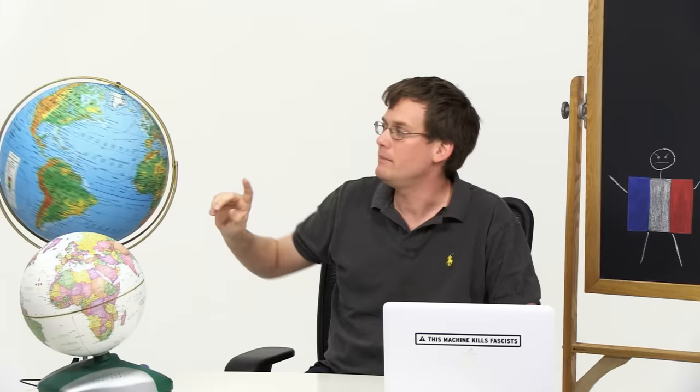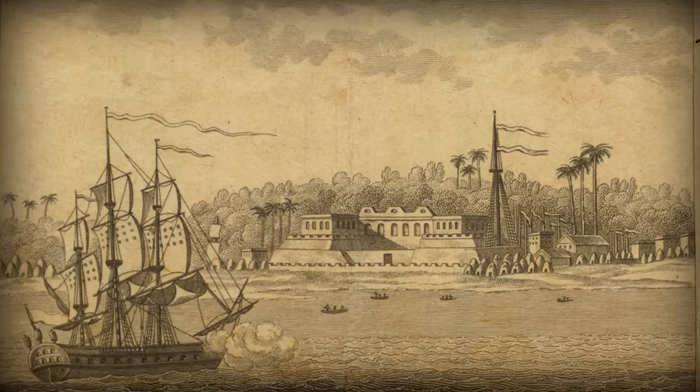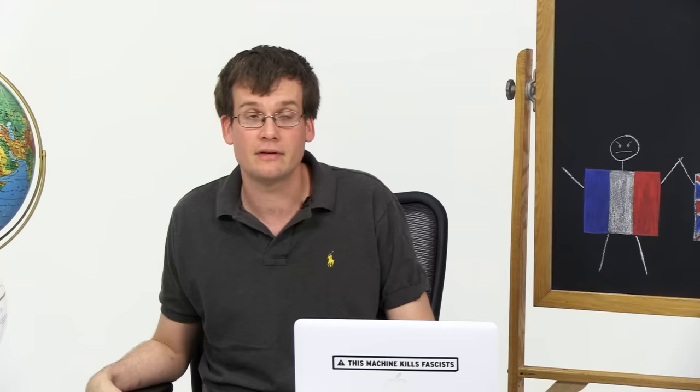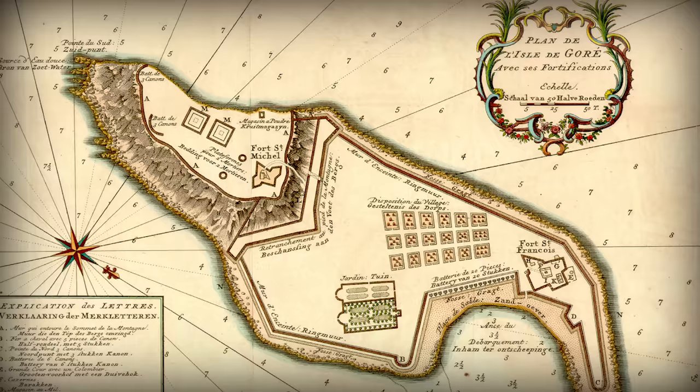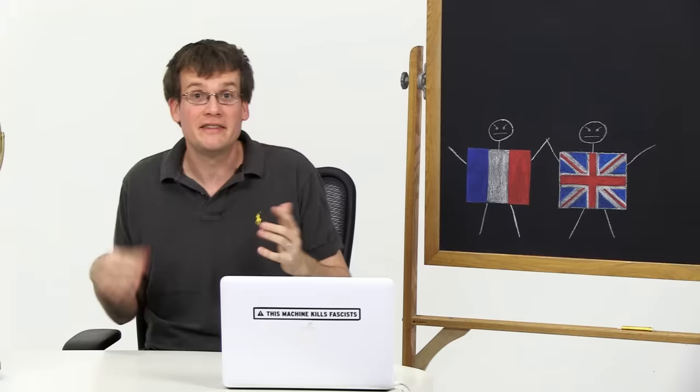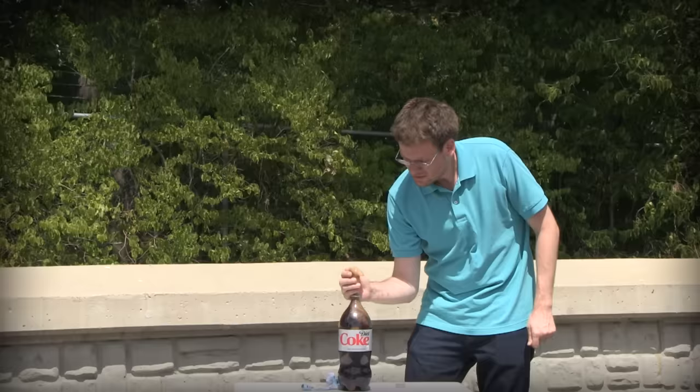Meanwhile, in West Africa, the British and the French were fighting there, too, because, you know, why not? The British attacked the French at a trading post called St. Louis and at a town called Gauray, both in Senegal. Why? Well, trade, of course. Senegal was the main source of gum Arabic, which is notable for many reasons, but most importantly, it is a key ingredient in the Diet Coke and Mentos phenomenon. So, of course, the British wanted lots of it.